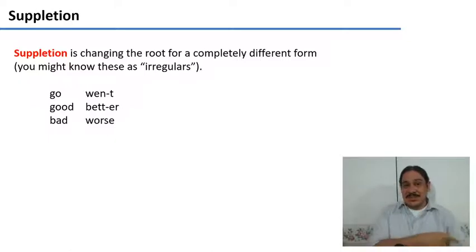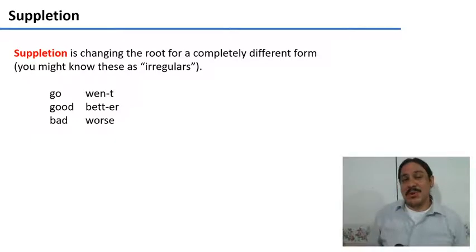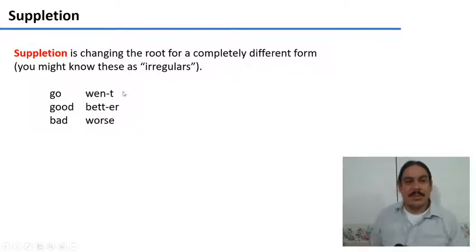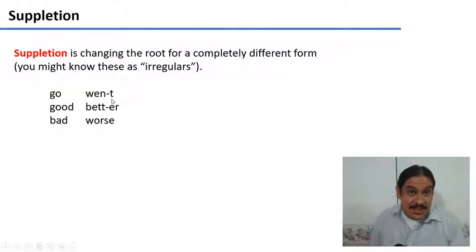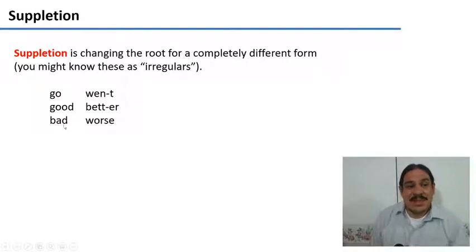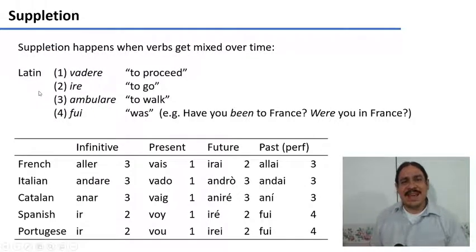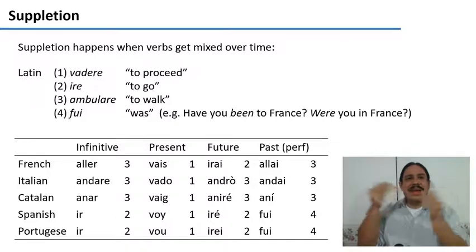Finally, we have suppletion, which is changing the root for something completely different. These are what we call irregular verbs. So if we have the present tense 'go', the past tense is 'went', where you do have the past tense suffix -t, but the root is now 'wen-'. In 'good', the comparative form is not 'gooder' — it's 'better'. And in 'bad', we have 'worse', which is a completely different root. Suppletion is very interesting because it happens when verbs get mixed up over time.